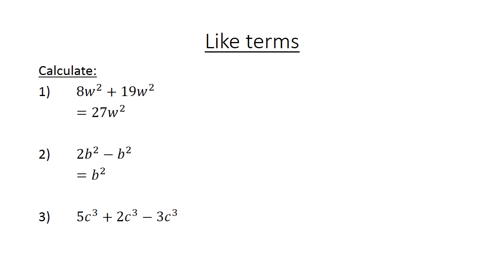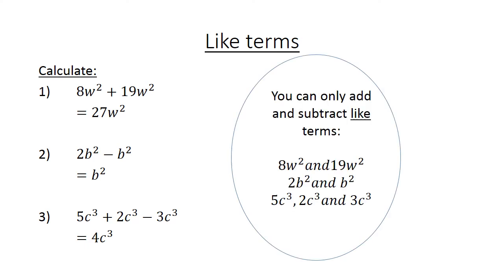5c cubed plus 2c cubed minus 3c cubed equals 4c cubed. You can only add and subtract like terms. 8w squared and 19w squared are like terms. 2b squared and b squared are like terms. c cubed and c cubed are also the same.